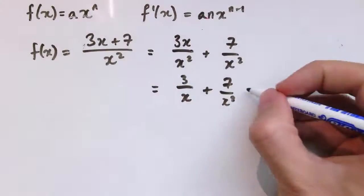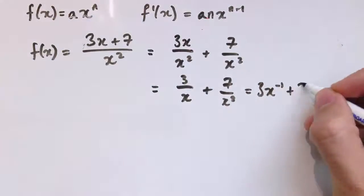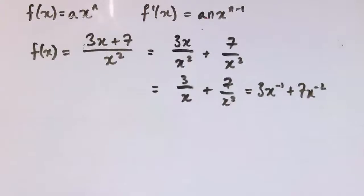And now these are 3x to the minus 1 and 7x to the minus 2, respectively. So this is now in a form that we can differentiate. It's a sum of the sorts of terms that we're interested in.